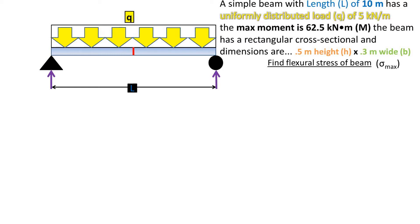In this problem, we have a simple beam with length L of 10 meters and a uniformly distributed load Q of 5 kilonewtons per meter of beam.